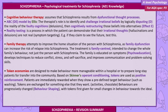Family therapy attempts to improve the home situation of the person with schizophrenia, as family dysfunction can increase the risk of relapse. The treatment is family-centred, intended to change the whole family's behaviour — not just the person with schizophrenia. The family is educated on symptoms through psycho-education, develops techniques to reduce conflict, stress and self-sacrifice, and improves communication and problem-solving skills.